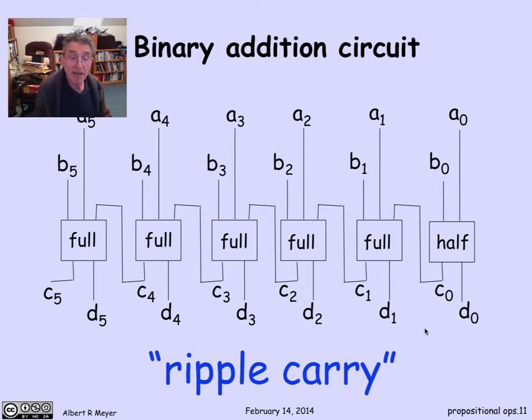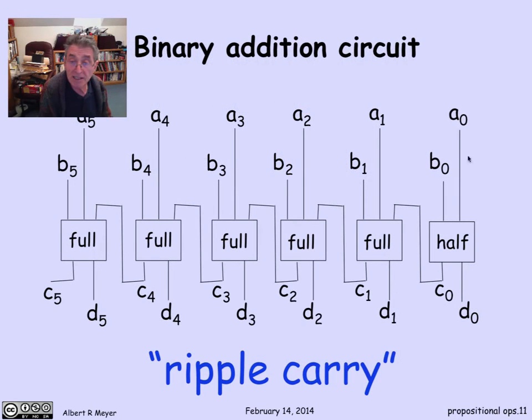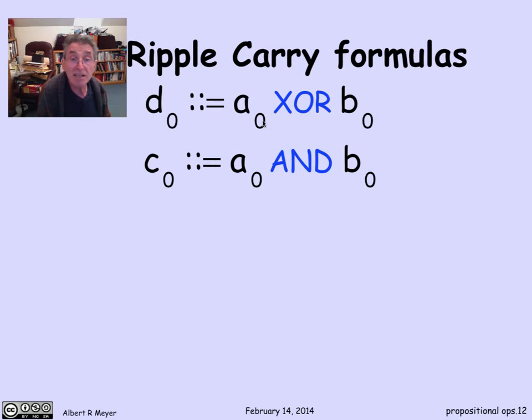Now let's go back to describing our ripple carry circuit of what was going on here. Now that we have the equations that characterize the behavior of these full adders and half adders, I can explain to you what the formulas are for all of these outputs, the c's and the d's. And that goes as follows. So the first one, looking at this half adder with a0, b0 coming in and c0, d0 coming out, I know that d0 is a0 xor b0, and c0 is a0 and b0. That's just the formulas that we have for the half adder when the inputs are a0 and b0, and I call the outputs d0 and c0.